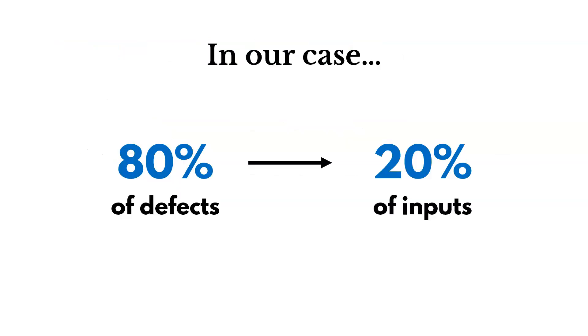In Lean Six Sigma, we would say that 80% of our defects come from 20% of our inputs. We may have lots of inputs to our process, but there's probably a small portion of them that are contributing to the defects that we're seeing.